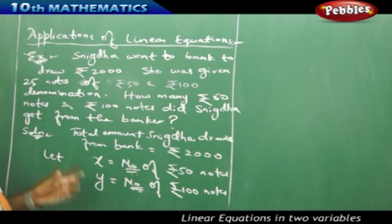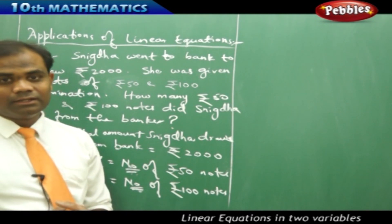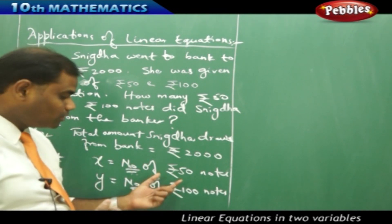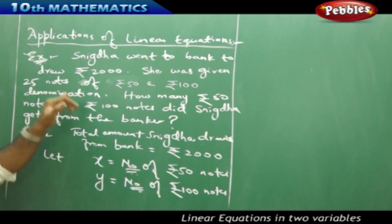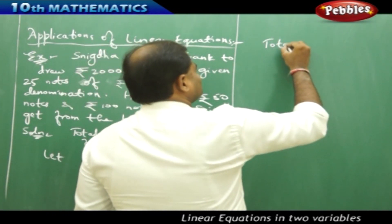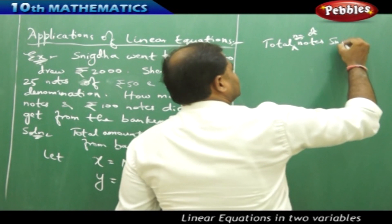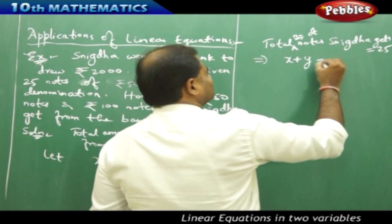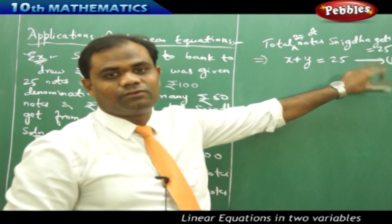The destination is to find X and Y by solving two linear equations. Since X is the number of 50-rupee notes and Y is the number of 100-rupee notes, and Snigna receives 25 notes total, I write: X plus Y equals 25. This is the first linear equation, since the only denominations are 50 and 100, so their total count must equal 25.